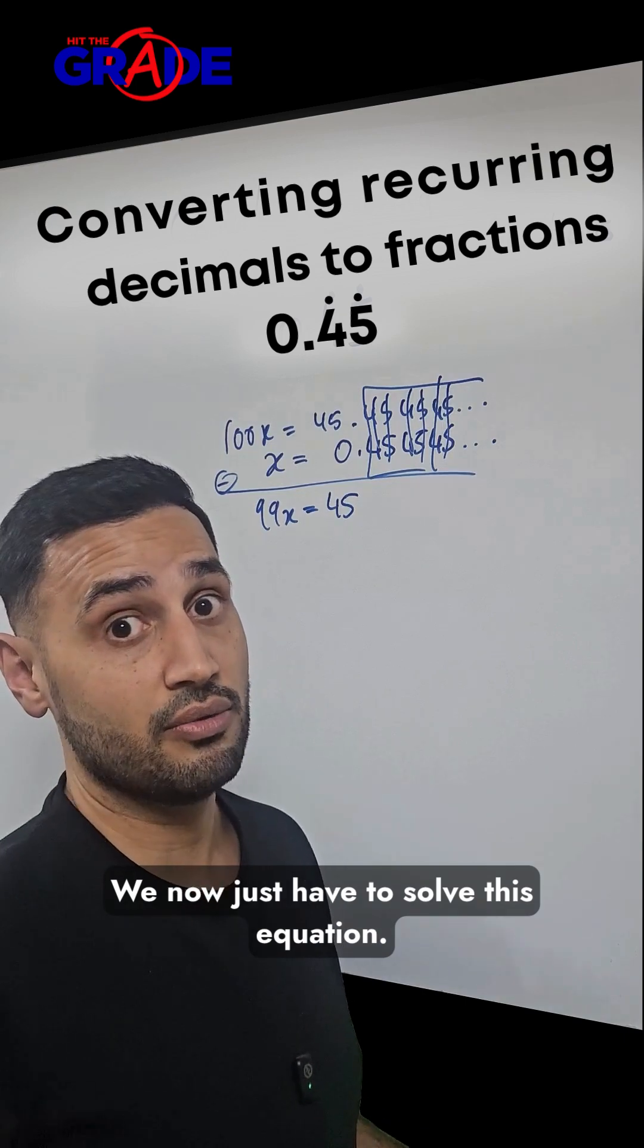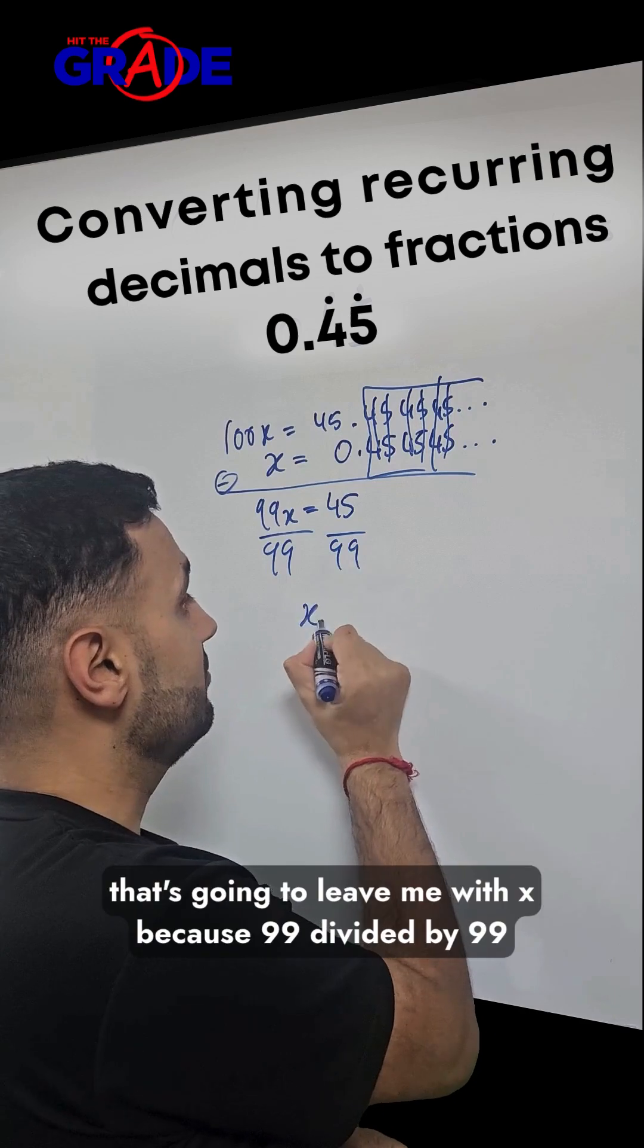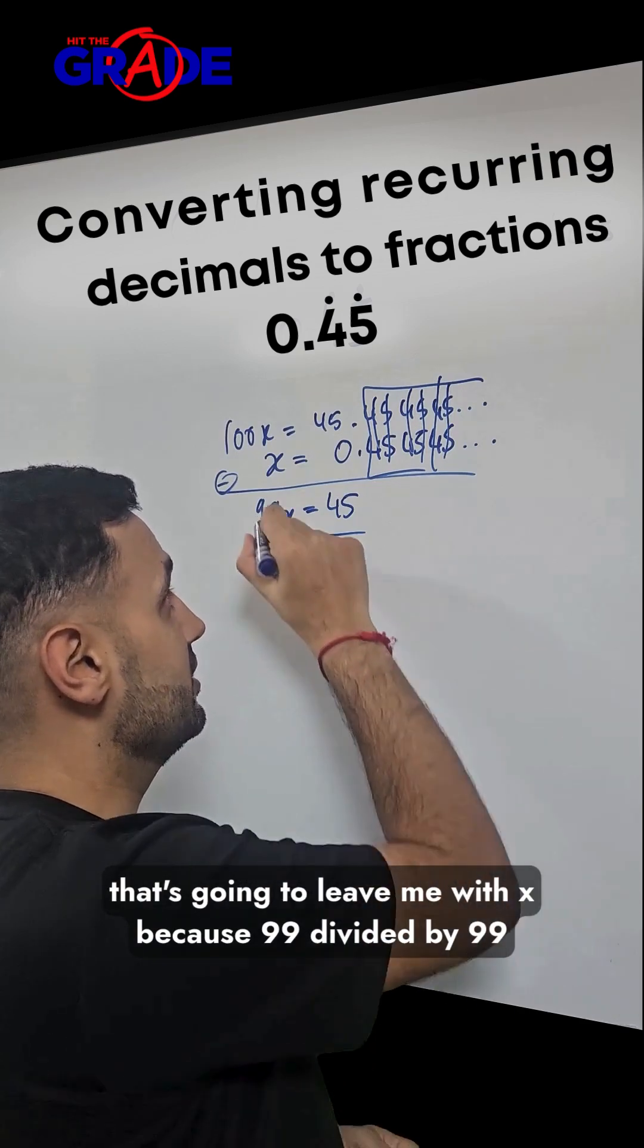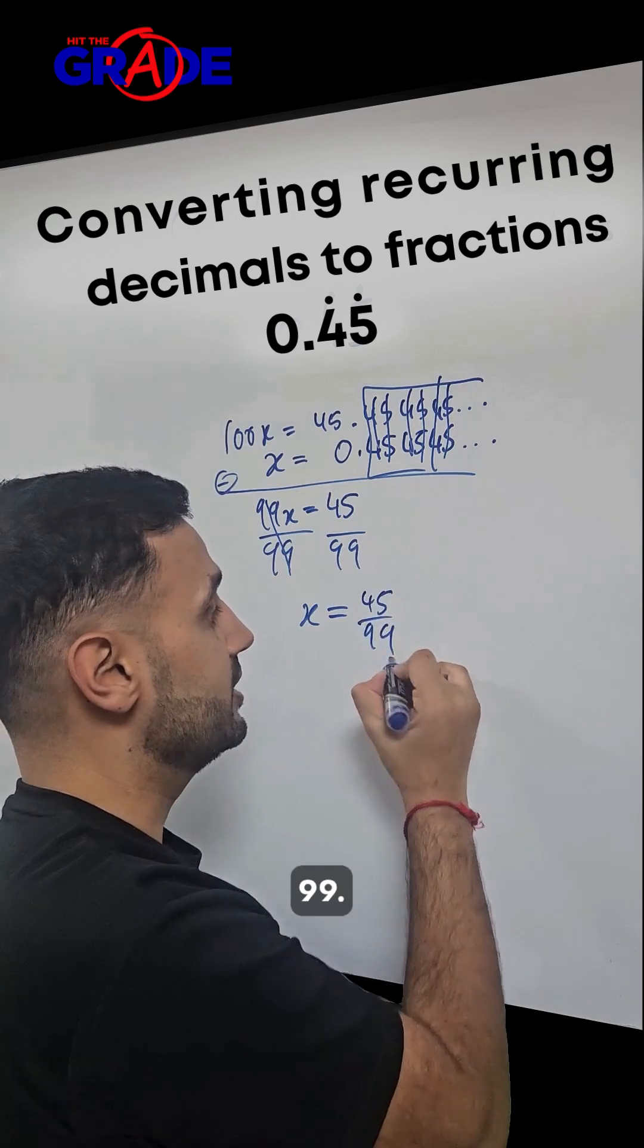We now just have to solve this equation. We're going to divide by 99 on both sides. That leaves us with x, because 99 divided by 99 is 1. So that's 1x, which equals 45 over 99.